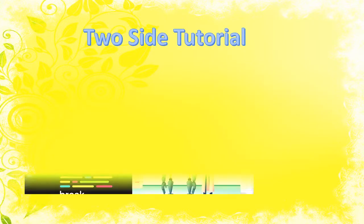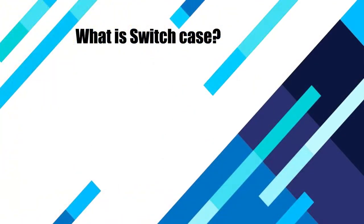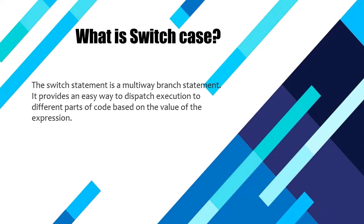Hello guys, welcome to Auto Site Tutorial Channel. In this video we are going to see switch case in C++. So what is a switch case? The switch statement is a multi-way branch statement. It provides an easy way to dispatch execution to different parts of code based on the value of the expression.